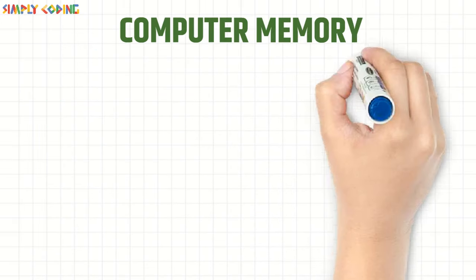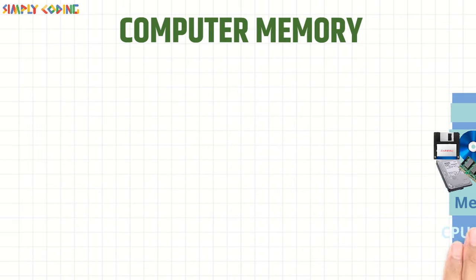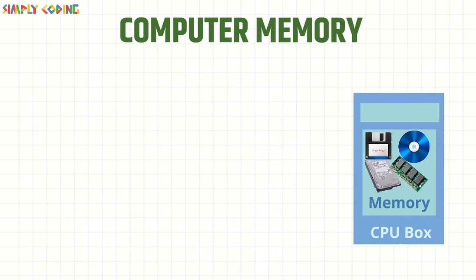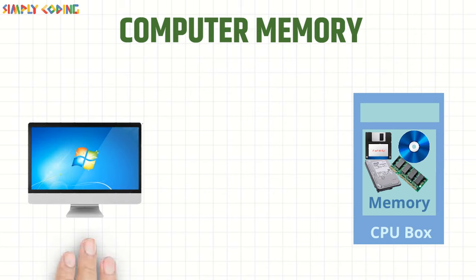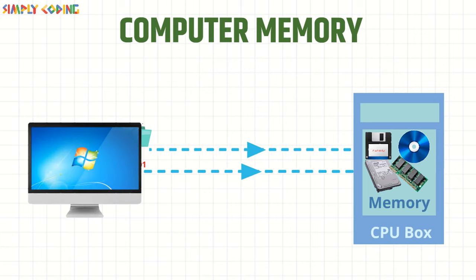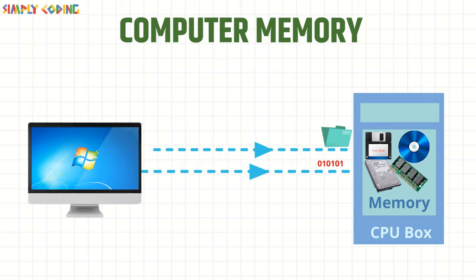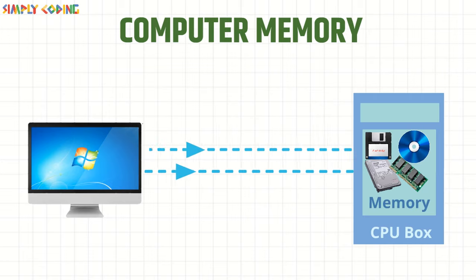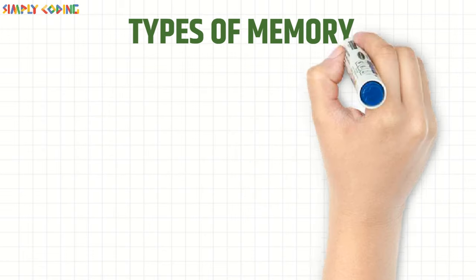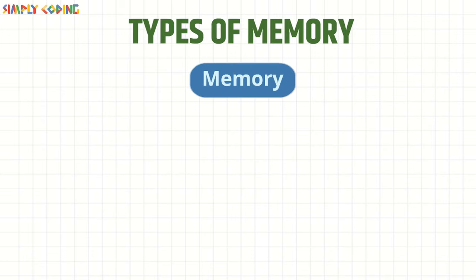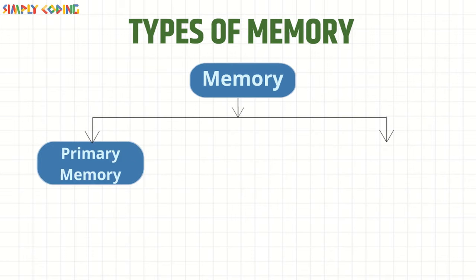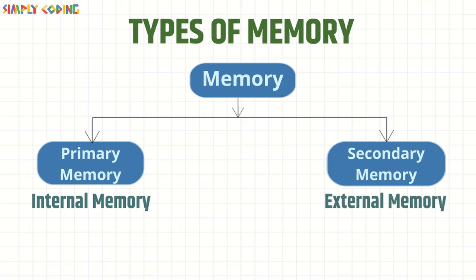Computer memory is the storage area of the computer. It is any kind of hardware which stores data and instructions for the computer. They are classified into two types: primary or internal memory, and secondary or external memory.